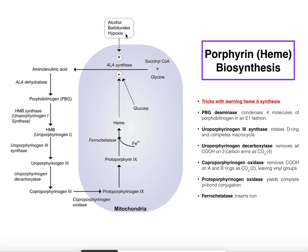Hypoxia will also induce the production of heme because heme is a cofactor for hemoglobin in the blood. If you have low levels of oxygen, you need more capacity to bind whatever oxygen is available. So hypoxia induces the transcription and translation of ALA synthase, which leads to more heme production — that heme will eventually be packaged into hemoglobin and myoglobin for skeletal muscle to help hold on to what oxygen you do have.